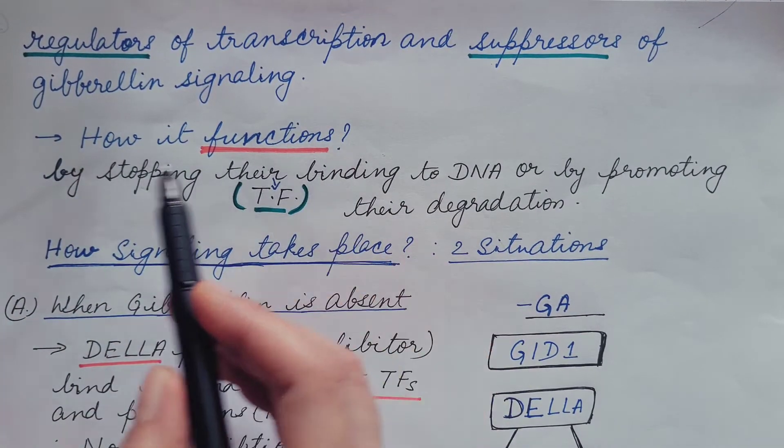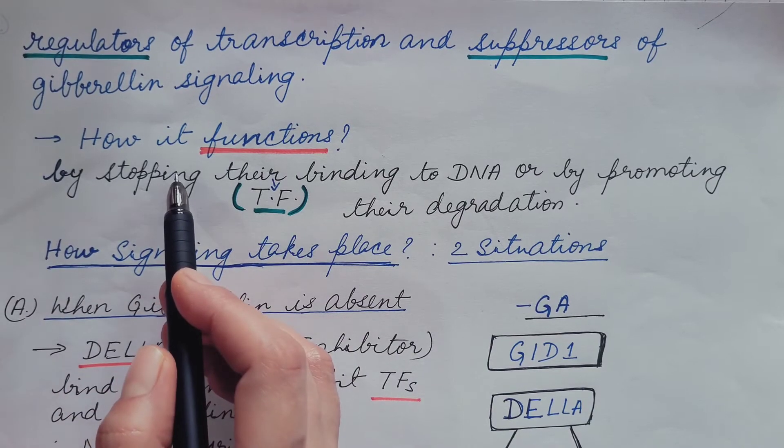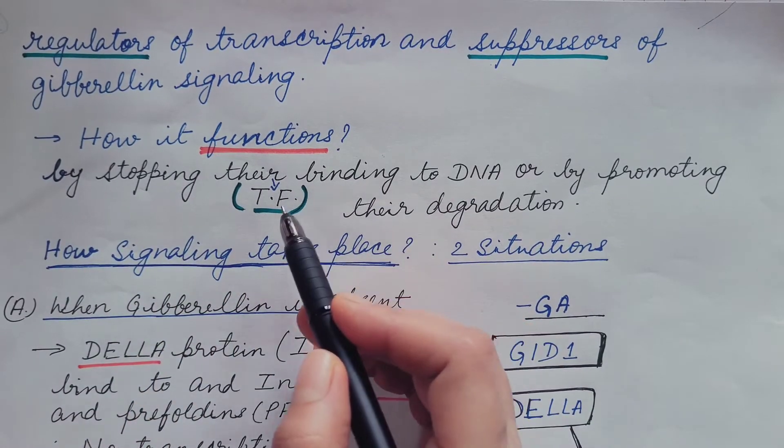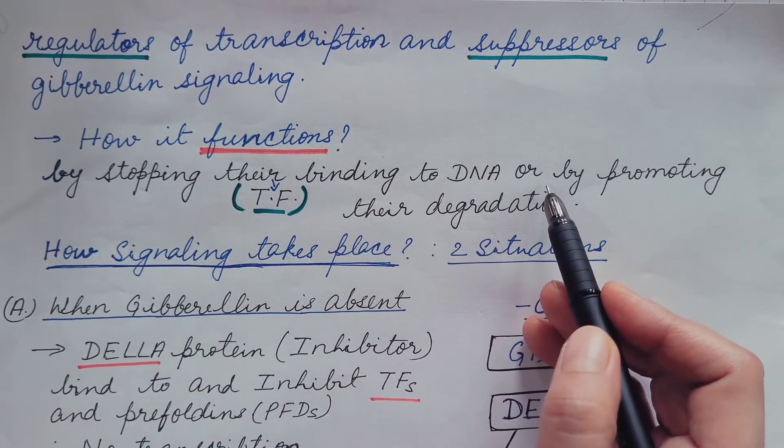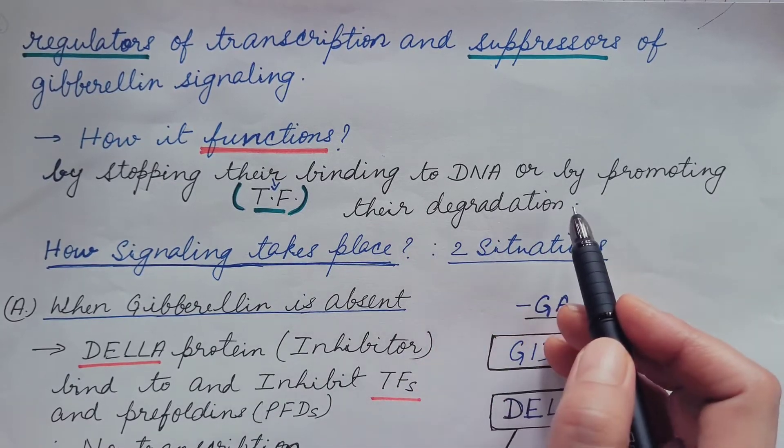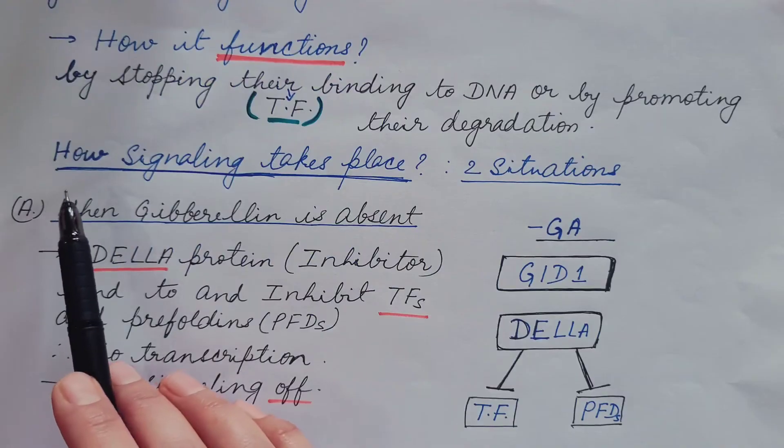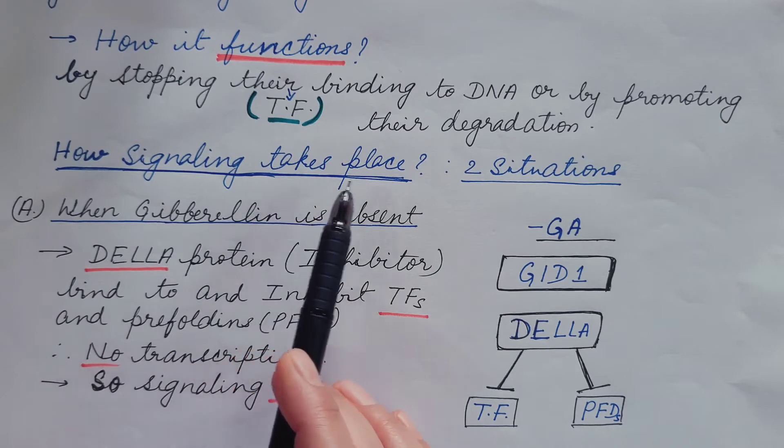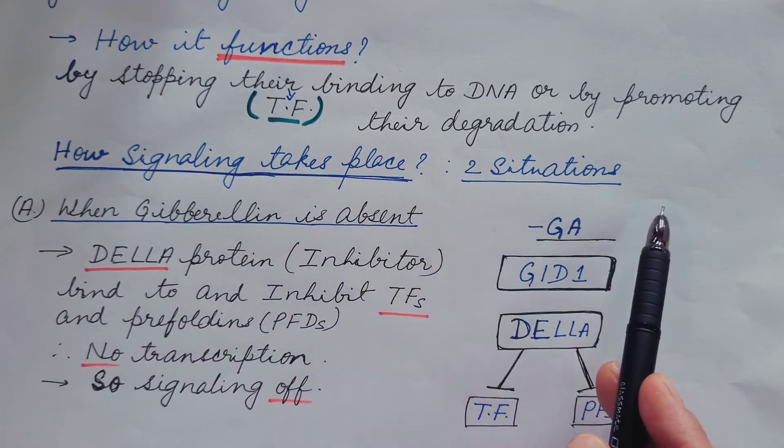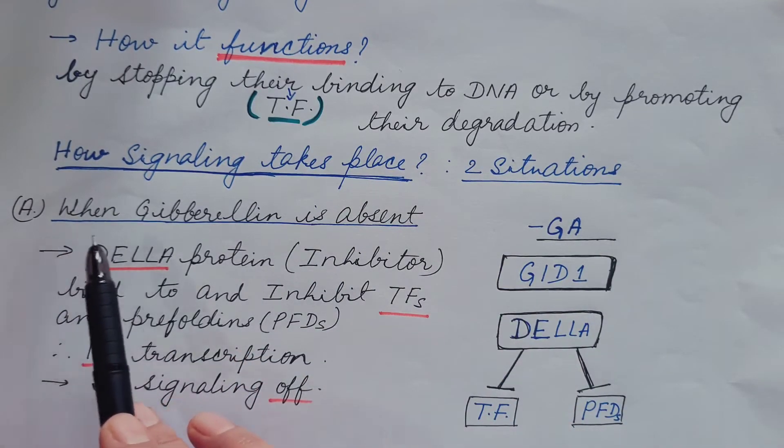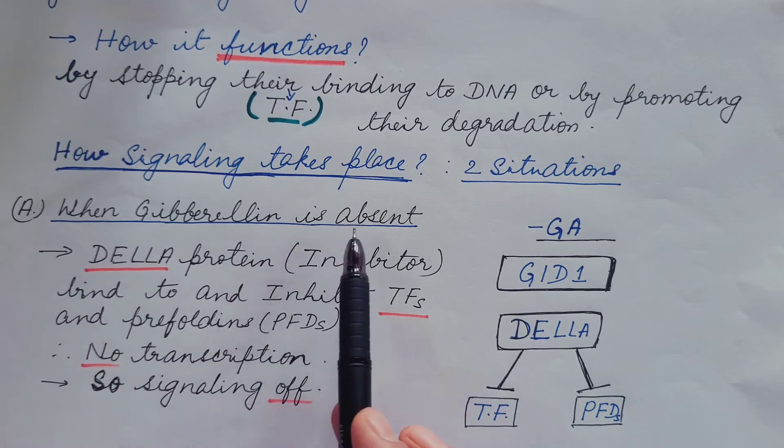So how does it function? It functions by stopping binding of transcription factor to DNA or by promoting their degradation. So now let us discuss how signaling takes place. There are two situations.